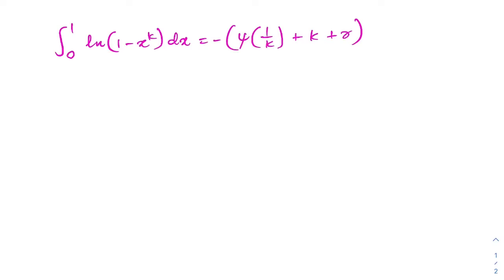Hello everyone, welcome to the Mathematics and My channel. Today I came up with another interesting integral: the integral from 0 to 1 of natural log of (1 minus x^k) dx, which is equal to minus digamma of (1/k) plus k plus gamma. Here gamma is Euler's Mascheroni constant.